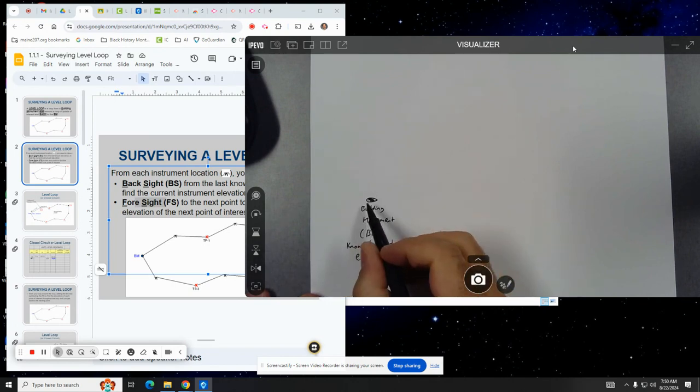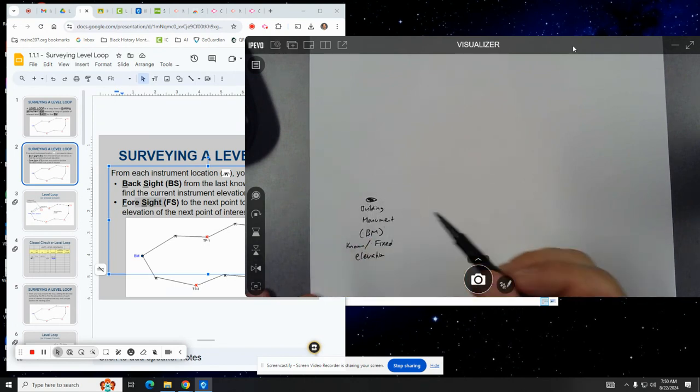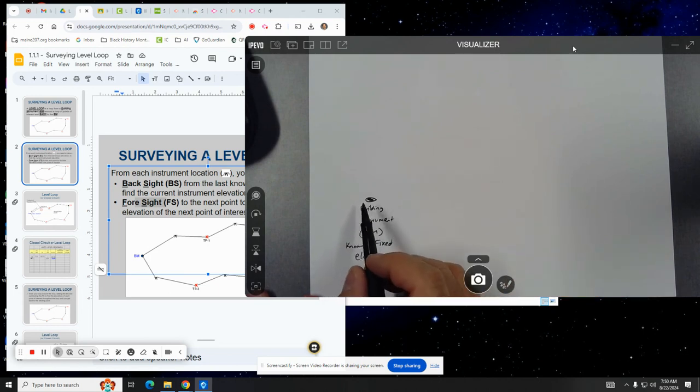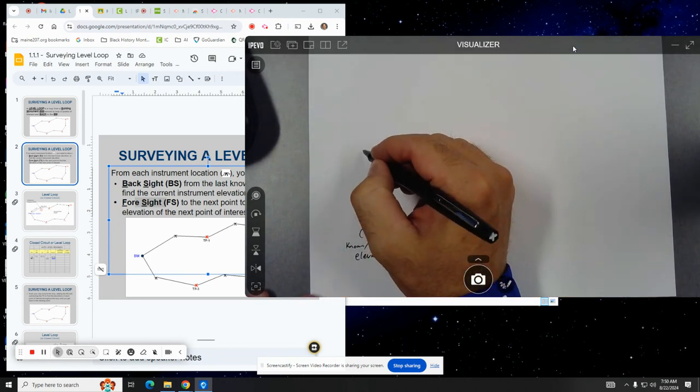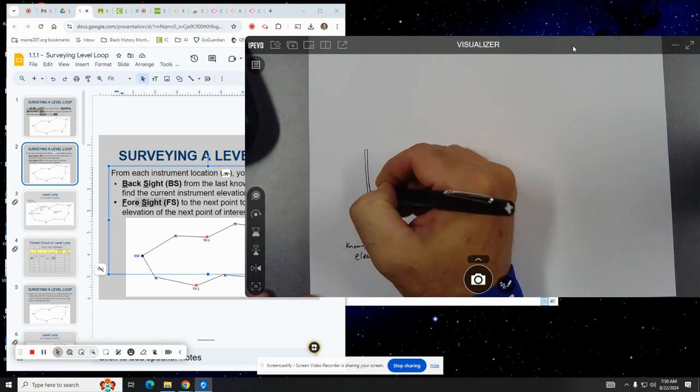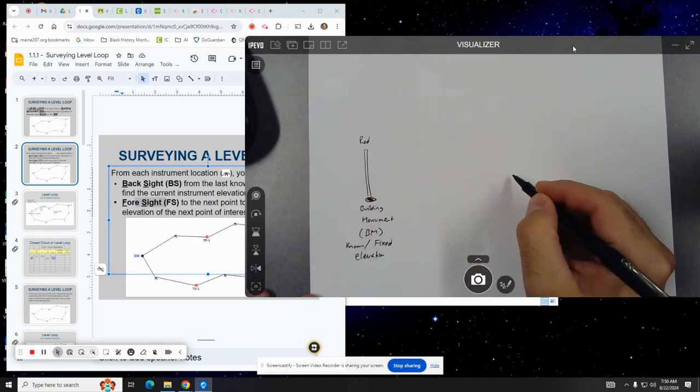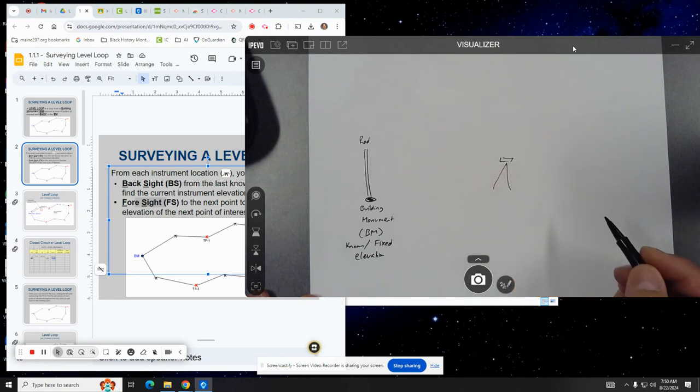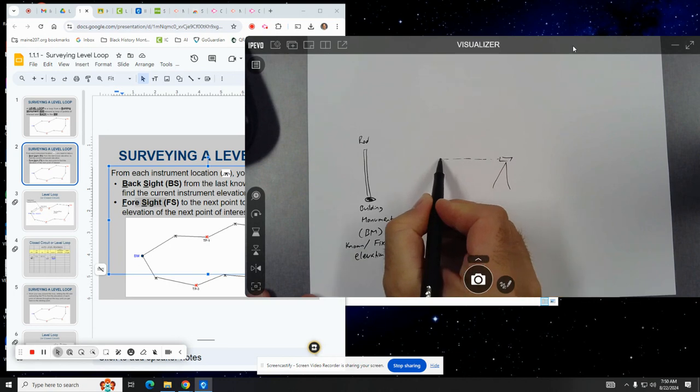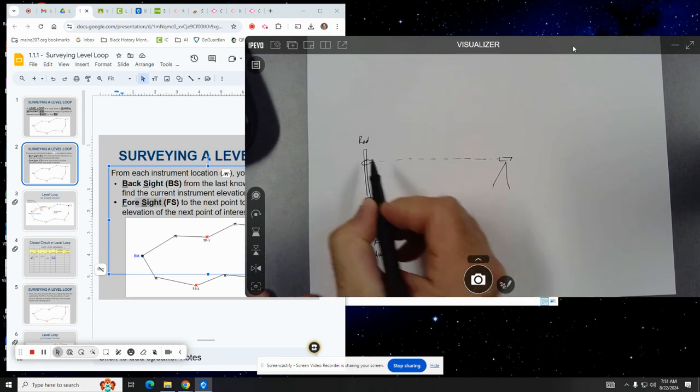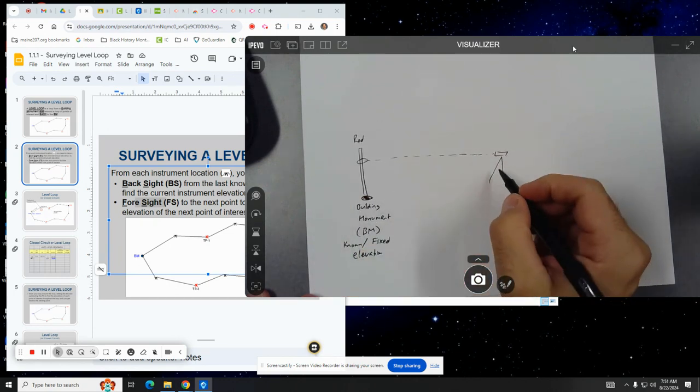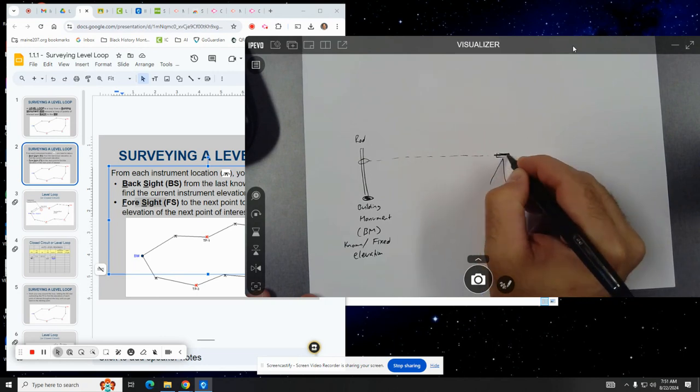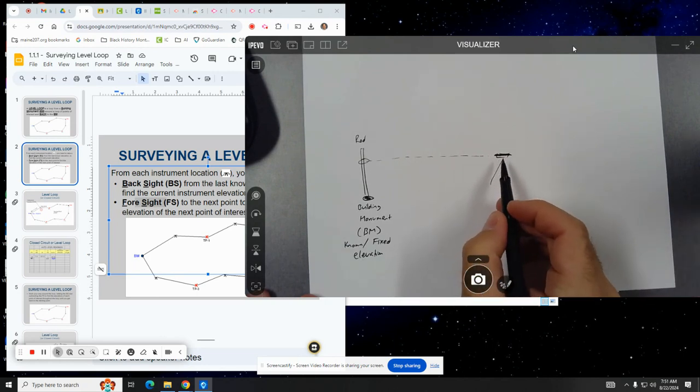And then once you shoot the elevation to that, then you are able to go forward and take the elevation to other places. So what a surveyor will do is they'll first put the rod here and they will then set up their tripod somewhere else. And they will look back here, see what the reading is. And what that will tell them is, what is the height of the instrument.